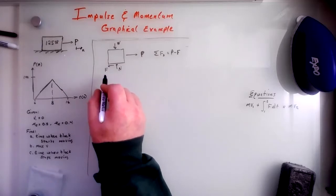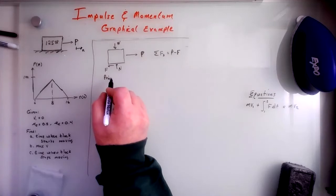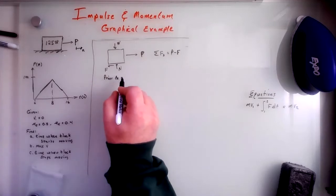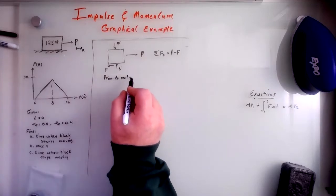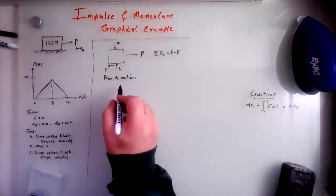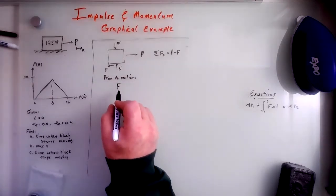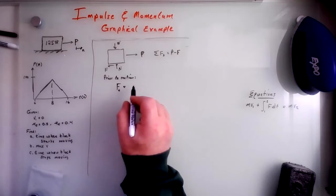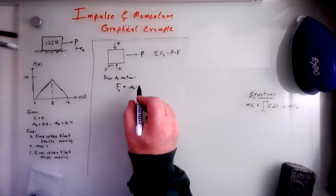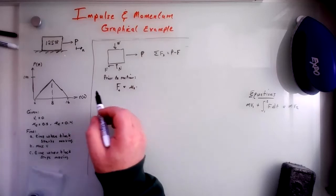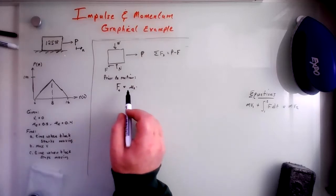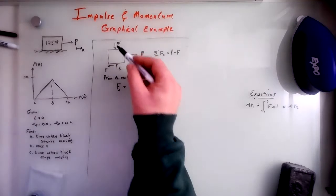So prior to moving, prior to motion, F is equal to mu s times normal, right? Friction is fun. But normal force is the weight.